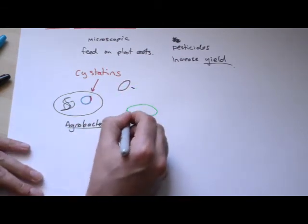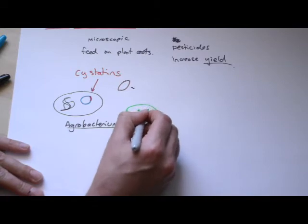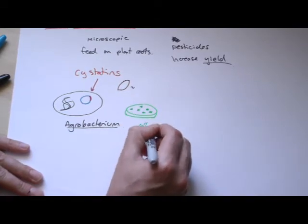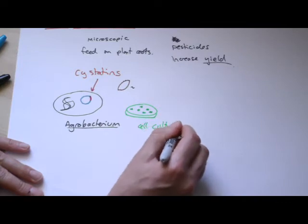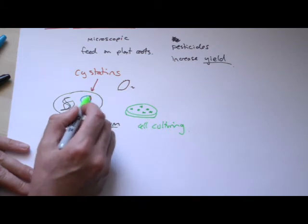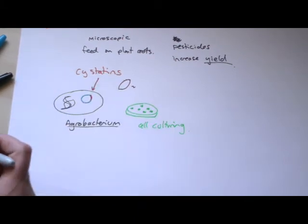You would then allow, this is called culturing, you basically got little blobs of plant cells growing. And these new blobs of plant cells would all contain this gene. They'd been genetically modified, they'd had a gene added.